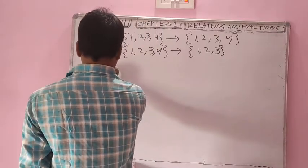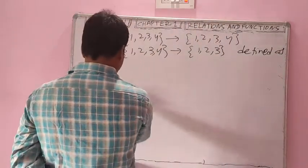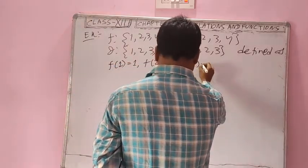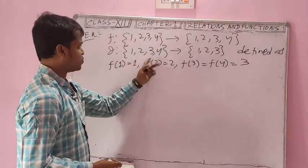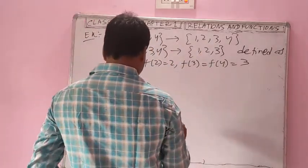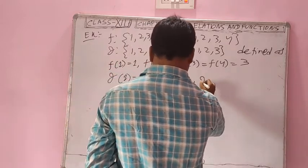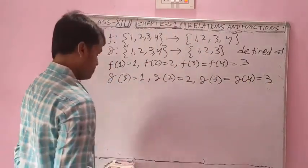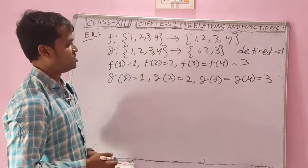Define F: F(1)=1, F(2)=2, F(3)=3, F(4)=3. The image of 3 and 4 are both 3. Then define G: G(1)=1, G(2)=2, G(3)=3, G(4)=3. The image of 1 is 1, image of 2 is 2, image of 3 is 3, image of 4 is 3.